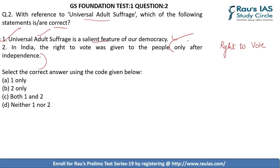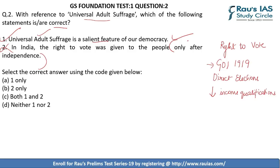The second statement is incorrect because the right to vote was first introduced during the Government of India Act 1919, before independence, and it was also the time when direct elections were introduced in the country for the first time. However, the people who could vote were relatively few due to income qualifications. Thus option A is the correct option.